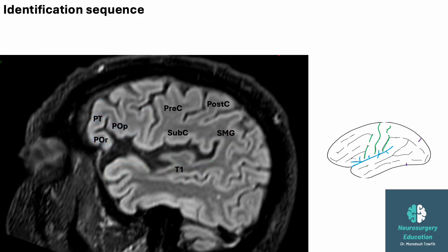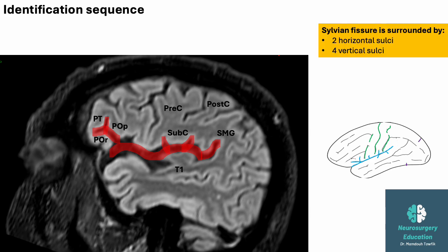Now we will discuss sulci. First you must identify the sylvian fissure. It is surrounded by six main sulci — two horizontal sulci and four vertical or oblique sulci. The first horizontal sulcus below the sylvian fissure is the superior temporal sulcus. The first horizontal sulcus located above the sylvian fissure is the inferior frontal sulcus. Note that you cannot see the superior frontal sulcus in this cut at the same time as the sylvian fissure.